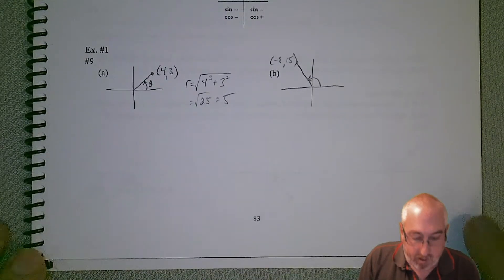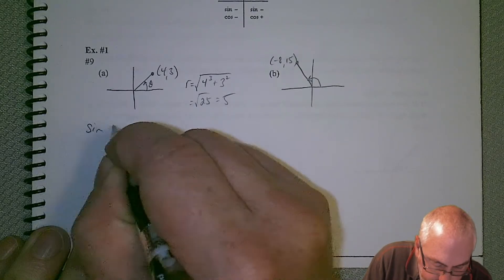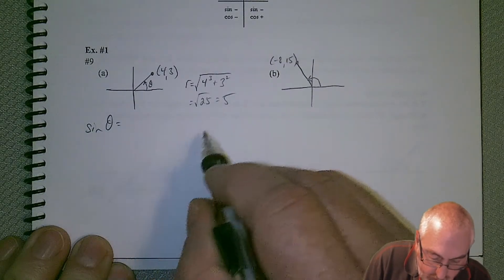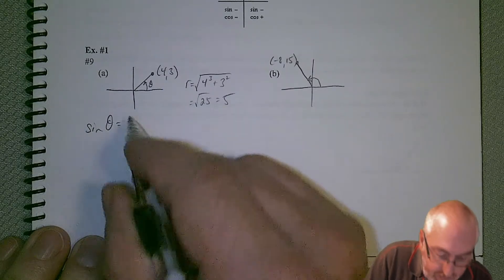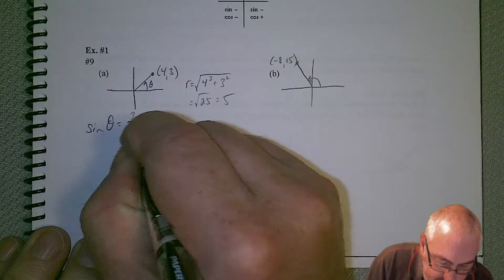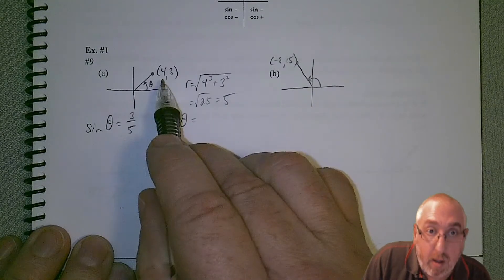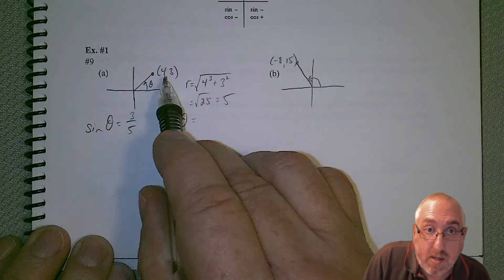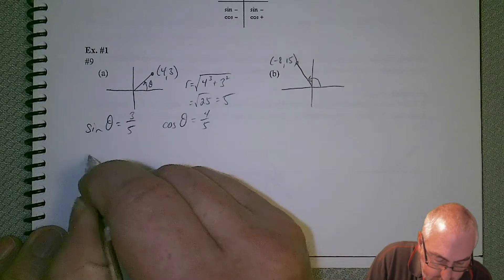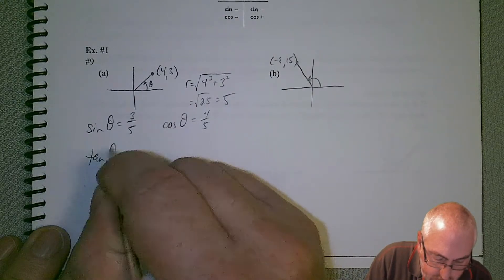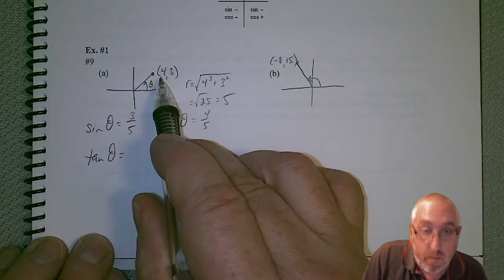So let's plug and jug. If we want the sine of theta, that's going to be y over r. So y in this case is 3, r is 5, so 3 fifths. Cosine should be x over r, so x is 4, so 4 over 5. Tangent should be y over x, so 3 over 4.